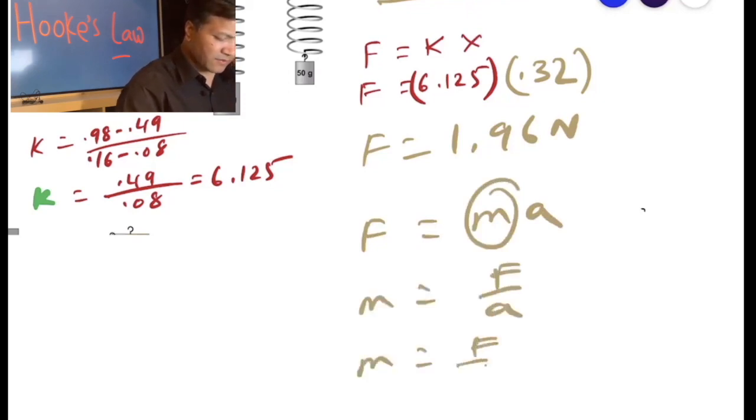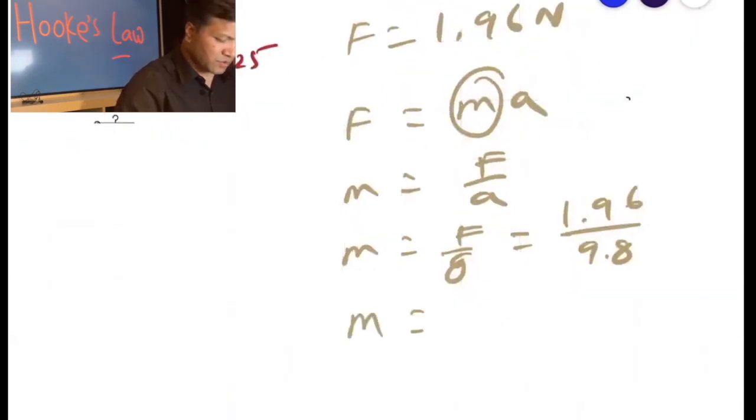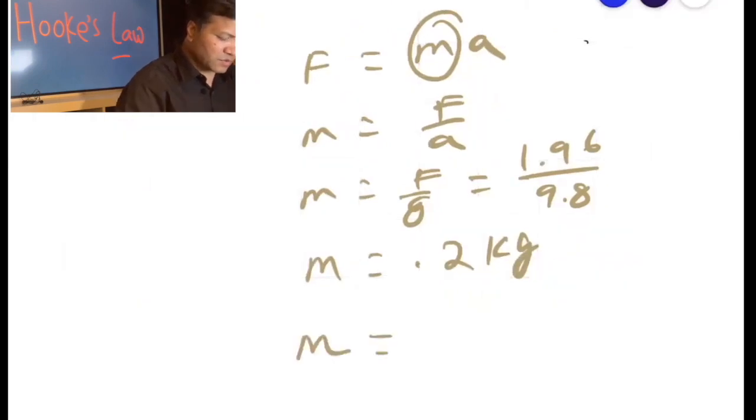F equals M—we want the mass, so mass is F over A. M is F over G, so F is 1.96, G is 9.8. Divide by 9.8 and that would be 0.2. Mass is 0.2 kilograms.